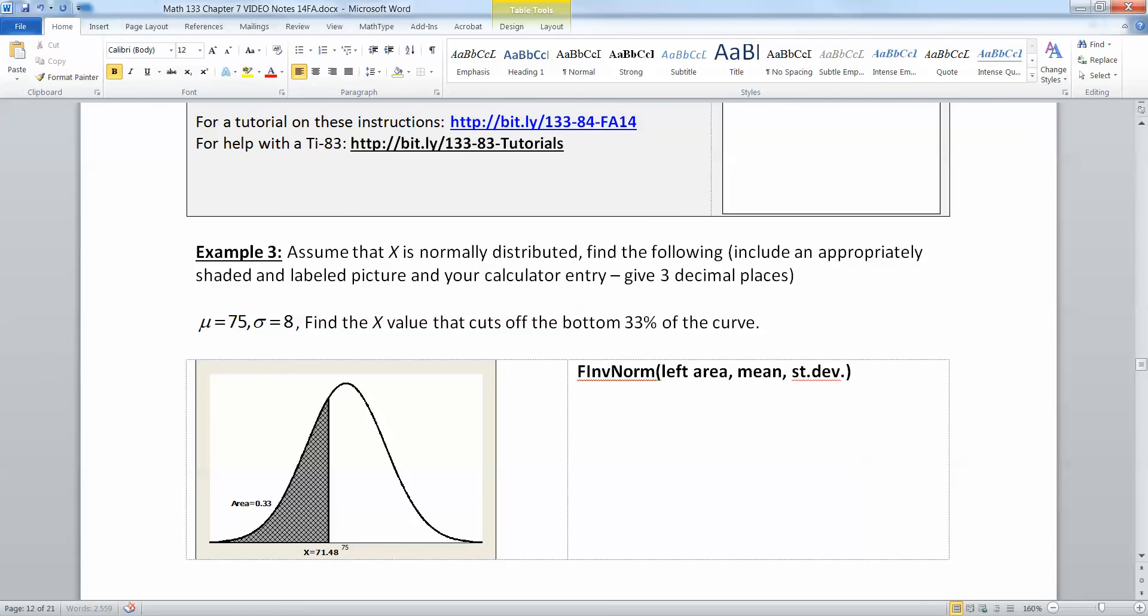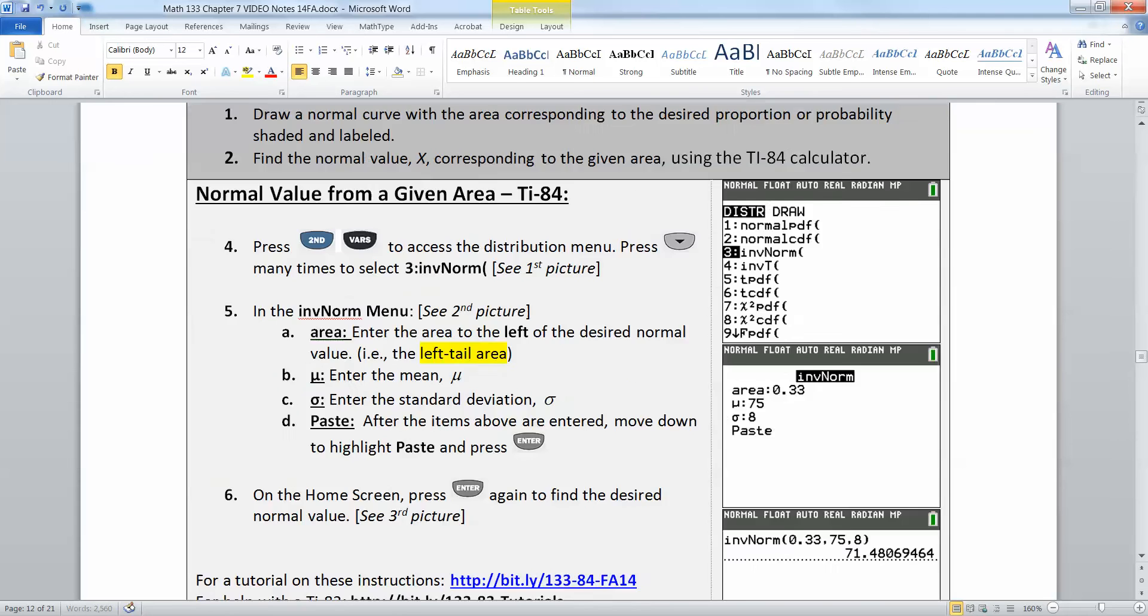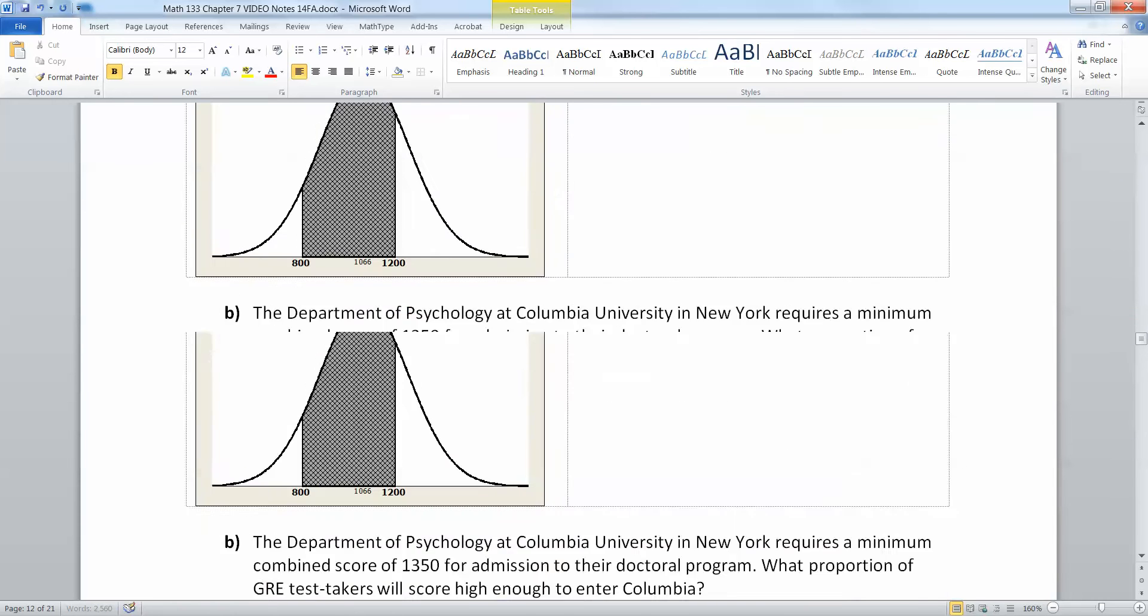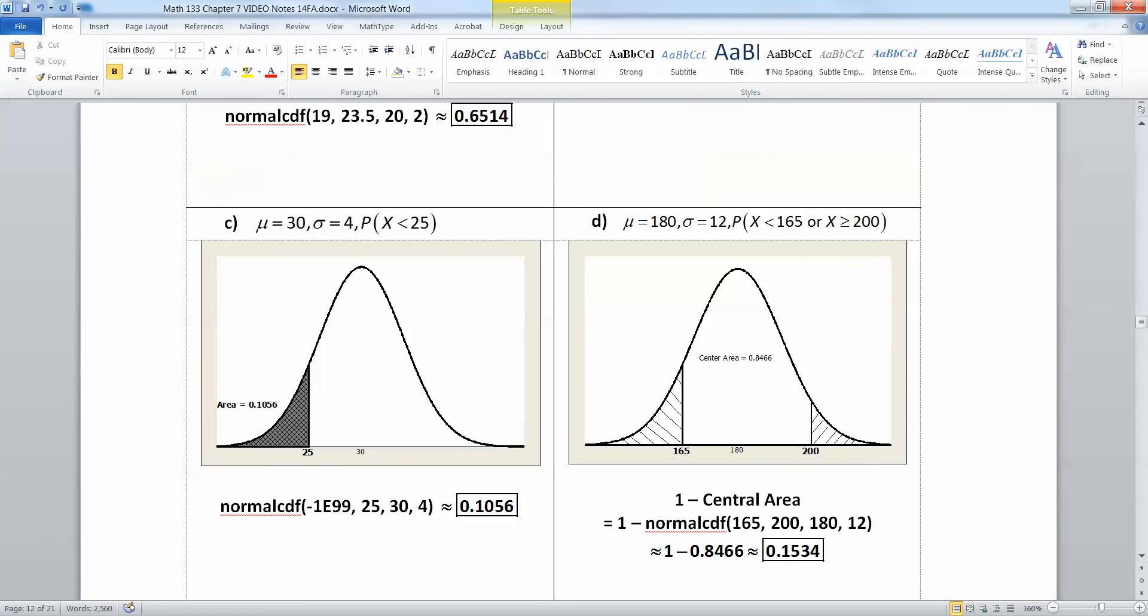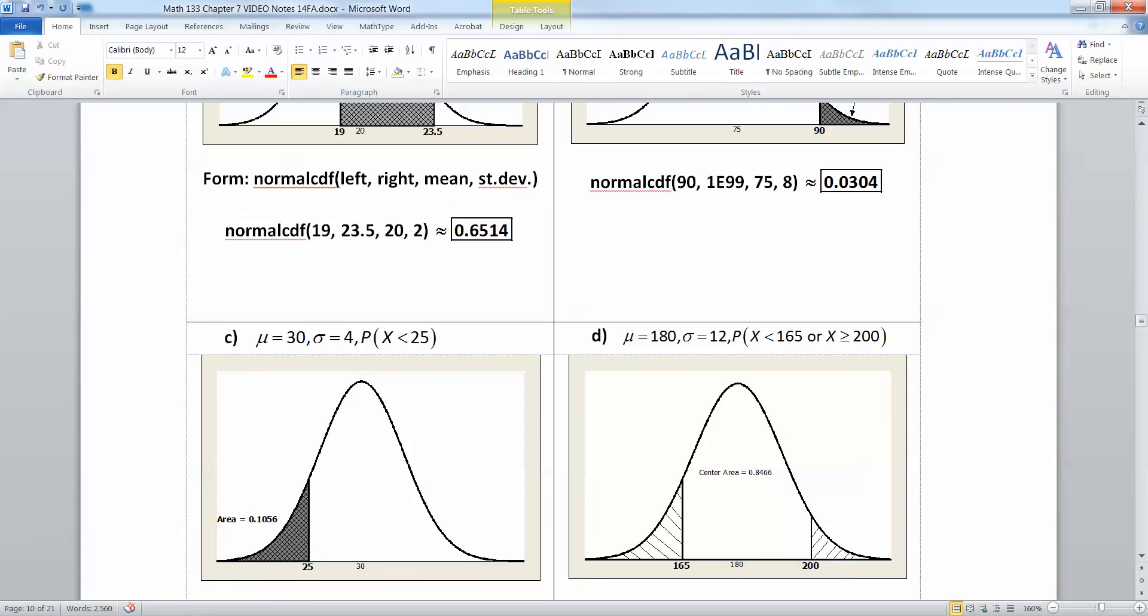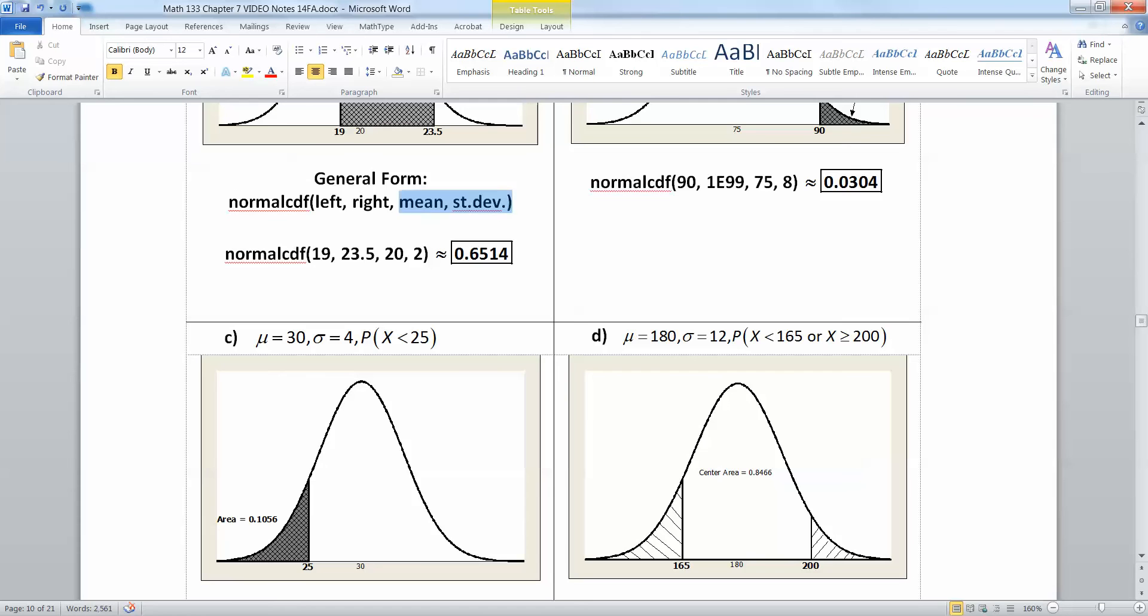And that gets me thinking, I should probably make a comment like that back a couple pages for normal CDF, just so you have it written somewhere what the general form is. So the general form, here it is, general form is normal CDF, and then left, comma, right, comma, mean, comma, standard deviation. So it's the left bound, left bound, right bound, mean, comma, standard deviation. Okay, that's always the general form for those.